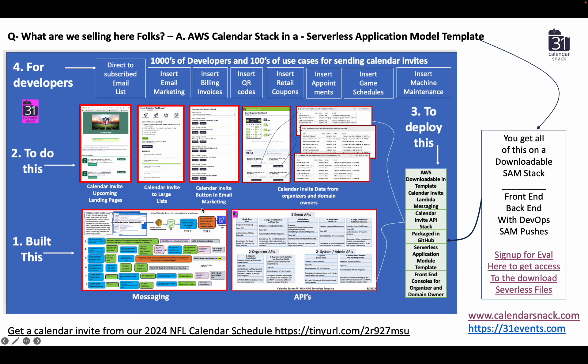We had to build this out first for the calendar server for AWS. And then as we were exploring and building out our API as a messaging layer and getting feedback from customers, we took this thing we called calendarsnack.com and actually built out a bona fide app. This app comes free with the calendar server itself.